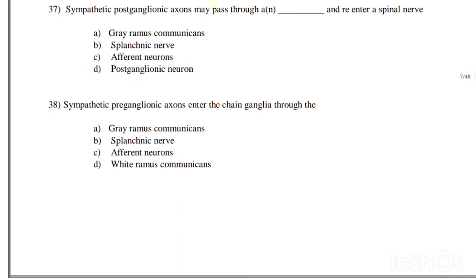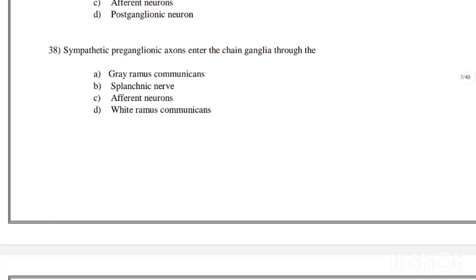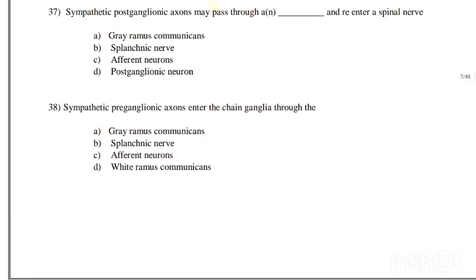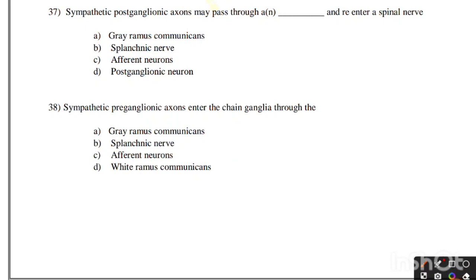Sympathetic preganglionic axons enter the chain ganglia through the: gray ramus communicans, splanchnic nerve, afferent neurons, or white ramus communicans. Correct answer is option D, white ramus communicans.